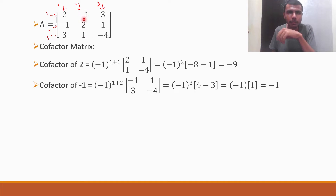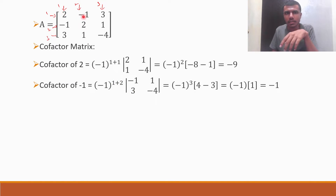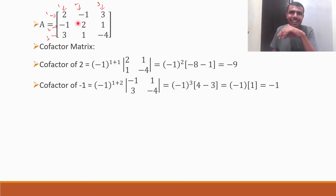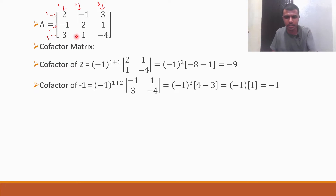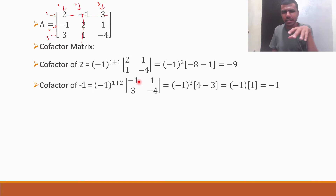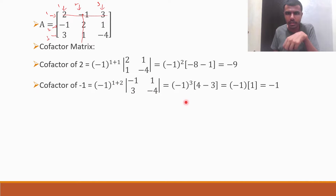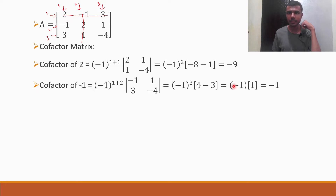Next, cofactor of minus 1. Minus 1's position is first row, second column — so 1,2. So minus 1 to the power 1 plus 2 into: strike off the row and column in which minus 1 is there, giving the determinant of minus 1, 1, 3, minus 4. Minus 1 into minus 4 is plus 4, minus 3 ones are 3. Minus 1 to the power 3 is minus 1, and 4 minus 3 is 1, so minus 1 into 1 is minus 1.